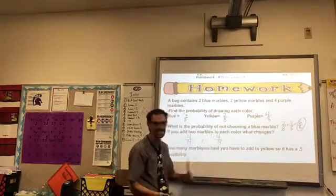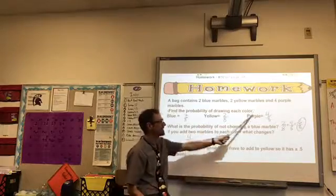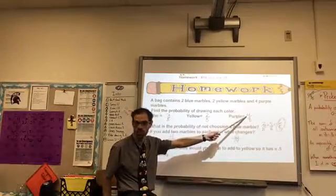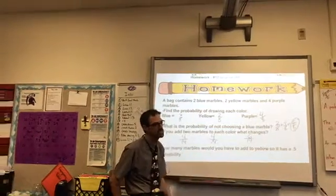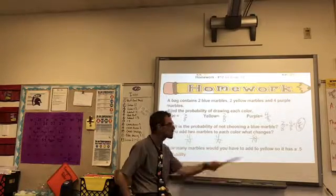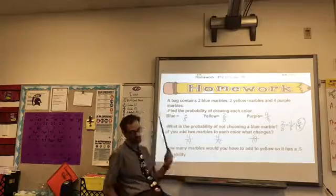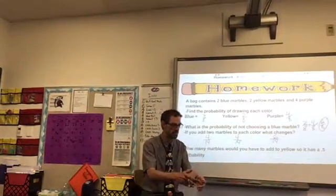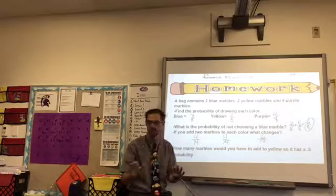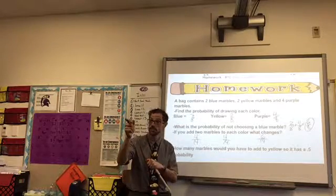And you can see 4 fourteenths is not 1 fourth. This would have to be 4 sixteenths to be 1 fourth. So it also changes the probability, and then this would become 6 fourteenths, which is not as high as 1 half. So here it was 1 half, here it's now 6 fourteenths — less than 1 half because 7 fourteenths is 1 half. Does that make sense? So adding anything to your bag isn't like doubling, tripling, or multiplying by 5. It's completely different — it's going to change your probability. Thumbs up. We're good there.